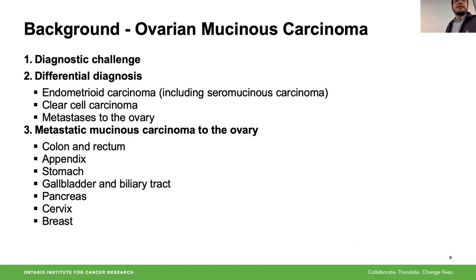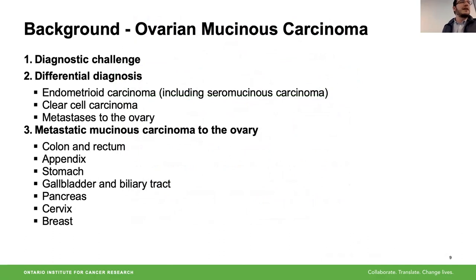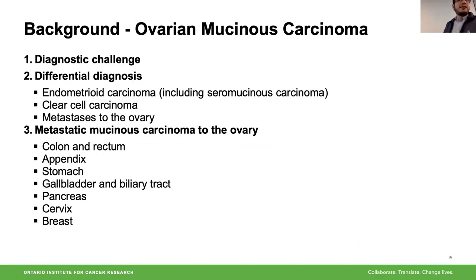Despite their low frequency, ovarian mucinous carcinomas are clinically difficult to diagnose because they can resemble other tumors — most importantly, tumors metastatic to the ovary, particularly from the gastrointestinal tract, and less frequently from the breast or cervix. These can all display mucinous appearance under the microscope, and a significant subset of metastatic cases are initially misdiagnosed as primary ovarian tumors.